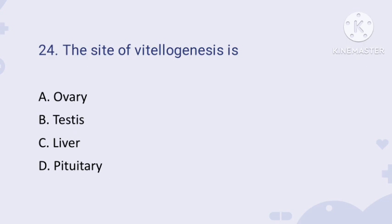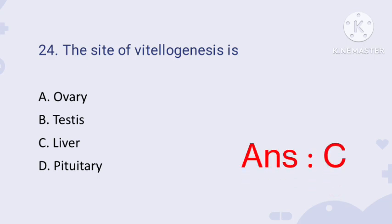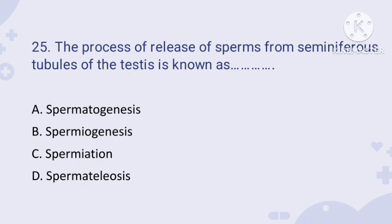Question number twenty-four: the site of vitellogenesis. You might say ovary, but ovary is the wrong answer. The right answer is liver — option C. Vitellogenesis is the process of formation of yolk, and it occurs in the liver.